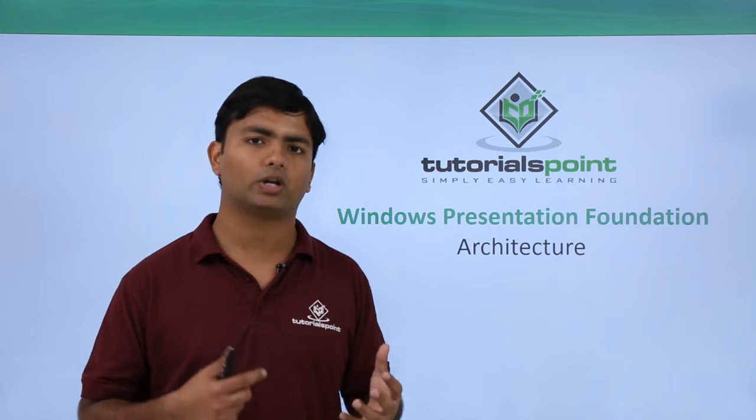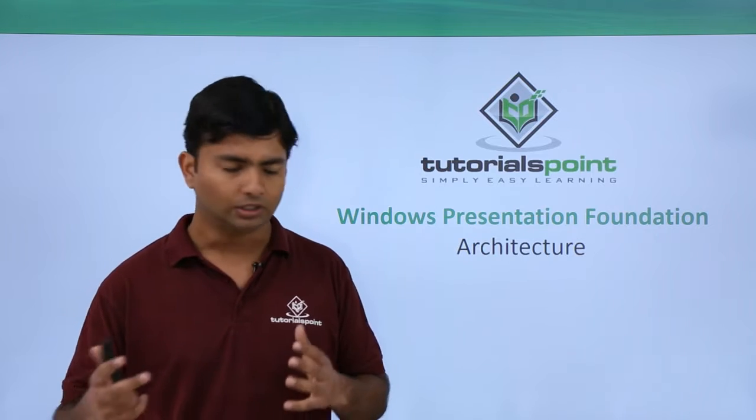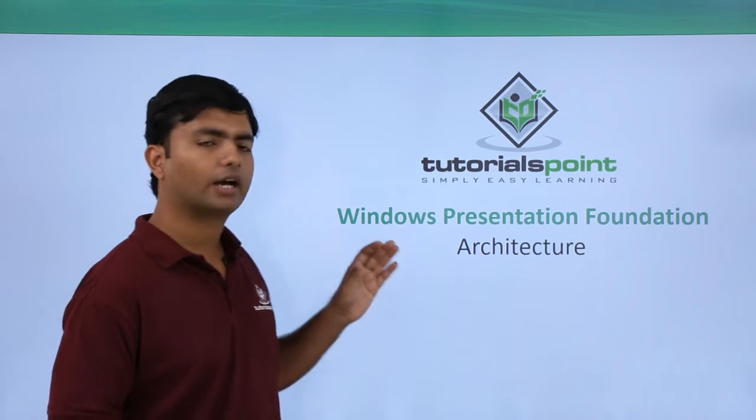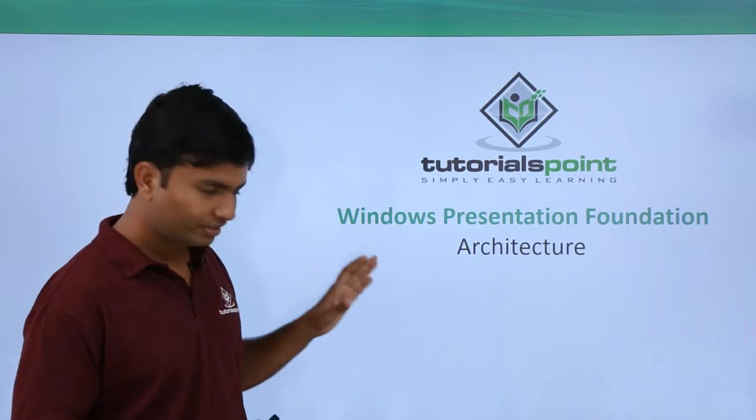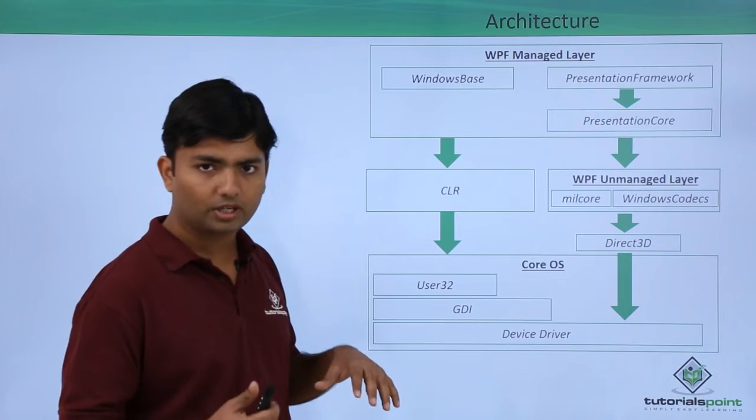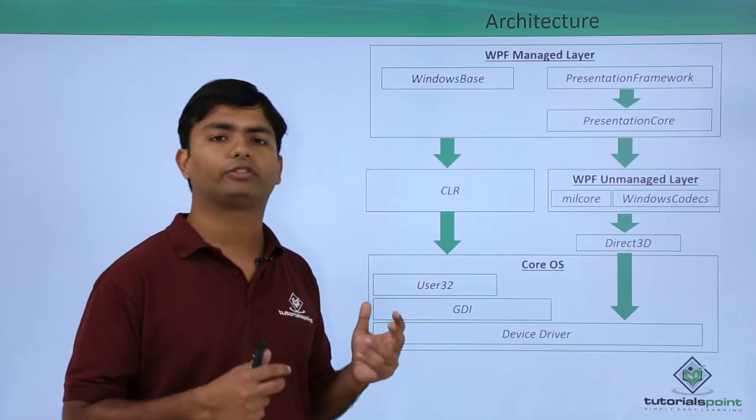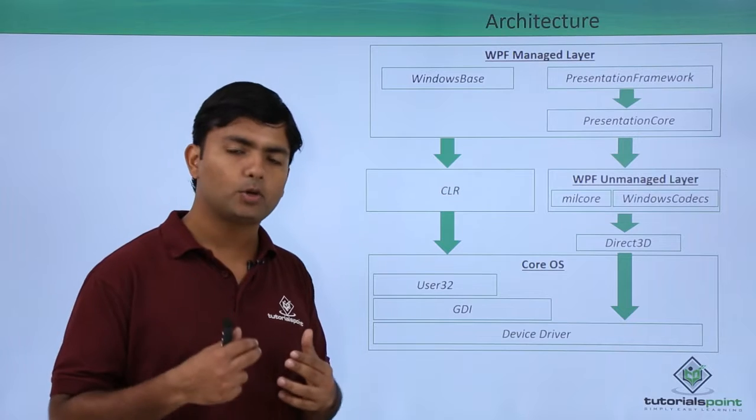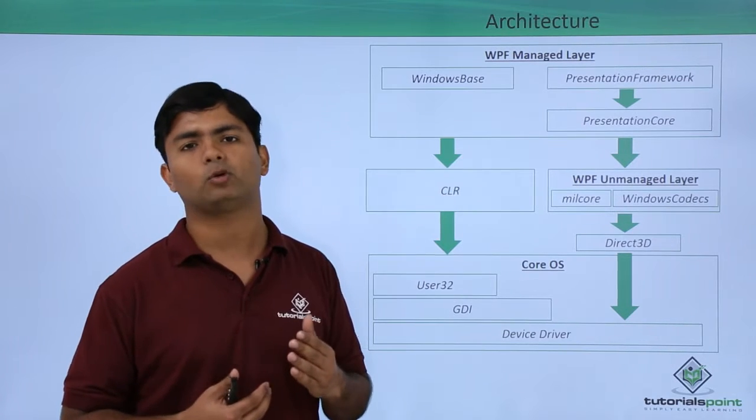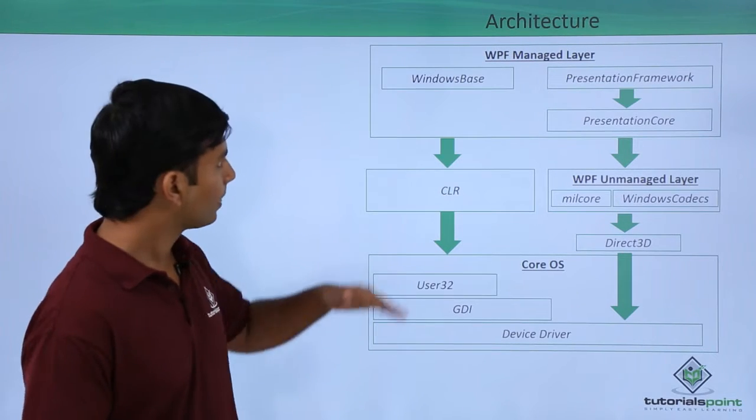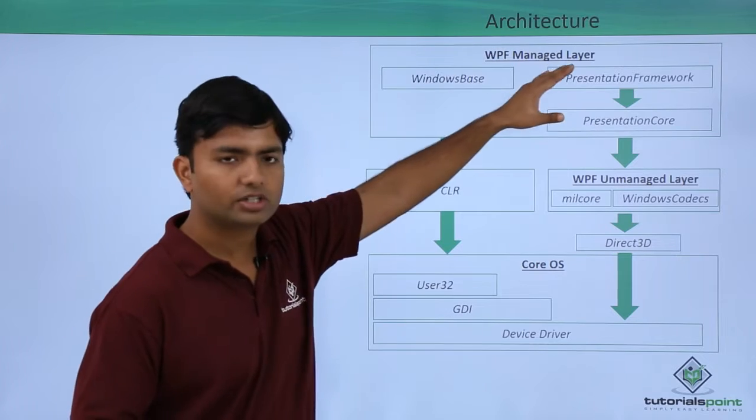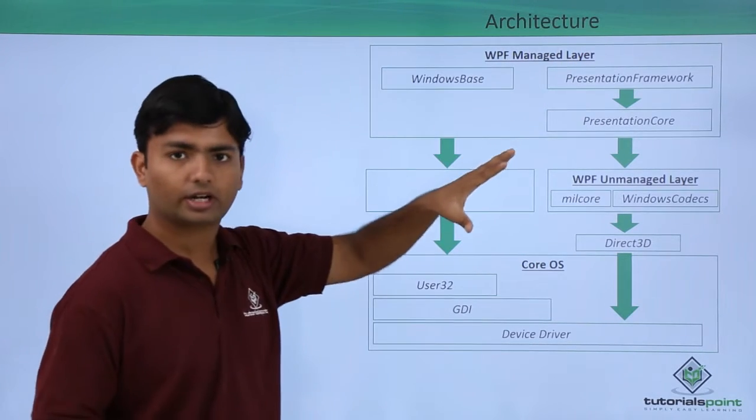Let's talk about the architecture. The architecture of WPF consists of two things: the WPF managed layer and WPF unmanaged layer. As you can see here, in the managed layer we have three DLLs or libraries with three essential components: Windows Base, Presentation Framework, and Presentation Core.